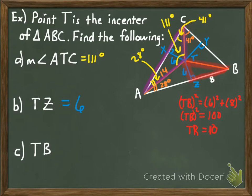That covers angle bisectors. The only property you need to know is that the incenter — where the angle bisectors intersect — is equidistant from the sides of the triangle. Thanks for watching, guys. See you next time.